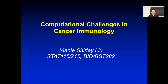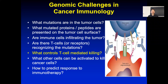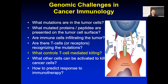Let's continue from last time. In the last lecture, we talked about genomic and computational challenges in cancer immunology — how to identify mutations in tumors from whole exome sequencing, how to find out which mutated proteins are going to be presented on the cell surface by looking at the HLA or MHC type of each patient, then using netMHC to predict which mutated peptides will be presented, and using expression data to figure out whether that peptide is highly expressed in the cancer.